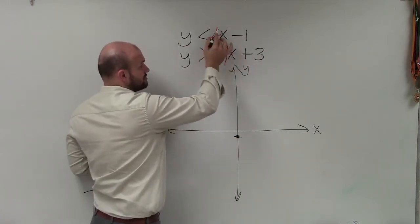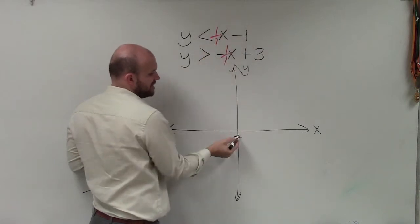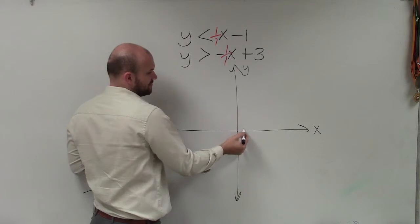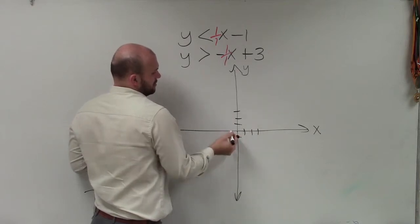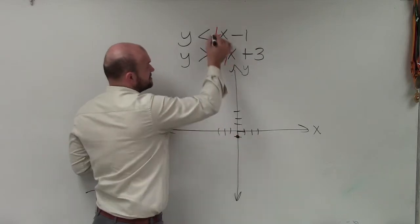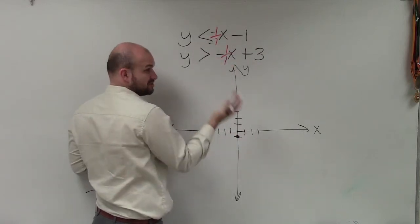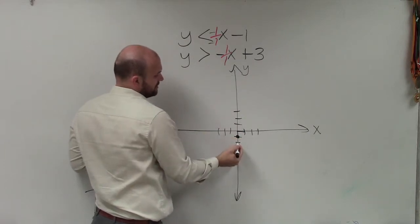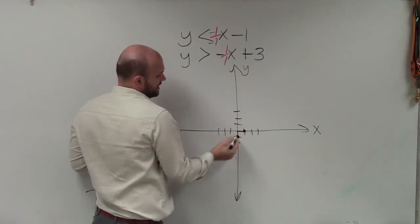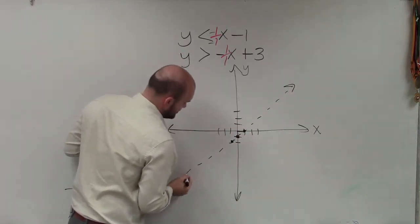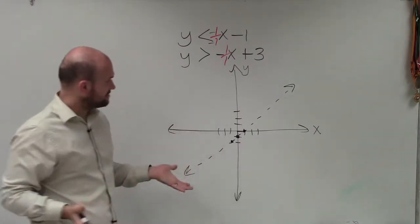Then I follow the slope, which is 1 over 1. That means the change in the y-coordinates is positive 1, and the change in the x-coordinates is positive 1. So I'm going to go up 1 over 1. I could also say that's a negative 1 over negative 1, which would still produce a positive 1. So I could go down 1 to the left 1. But either way you look at it, you can see they're going to be on the same line. And remember, they're going to be dashed, because it's not a part of the solution. And there's my graph.